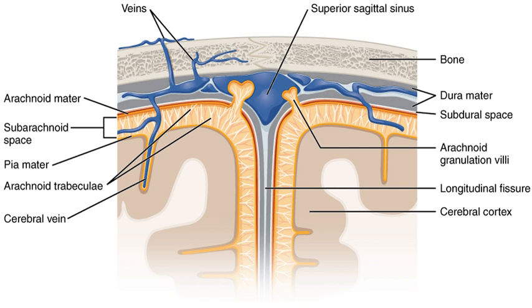Falx cerebelli, a vertical infolding, lies inferior to the tentorium cerebelli, separating the cerebellar hemispheres. Diaphragma sellae, the smallest infolding, covers the pituitary gland and sella turcica.